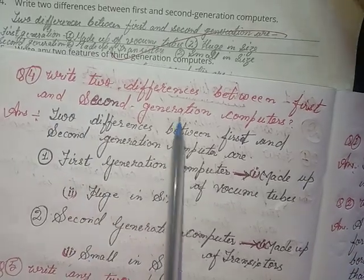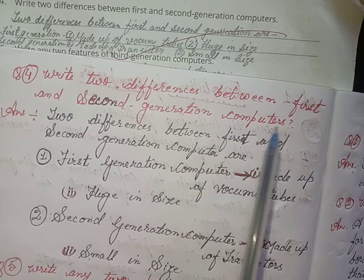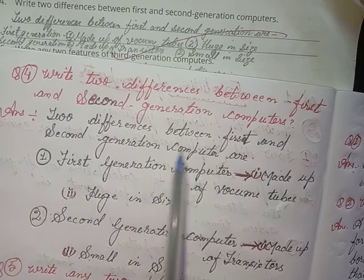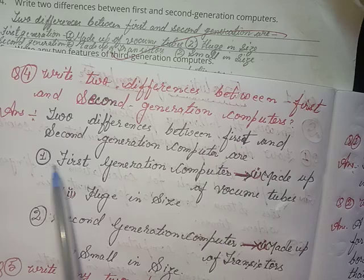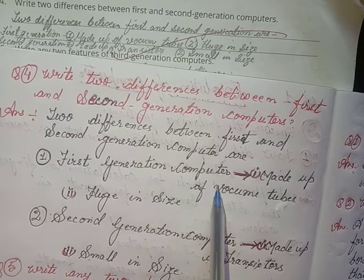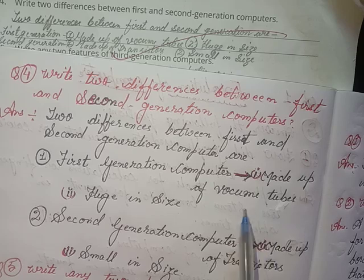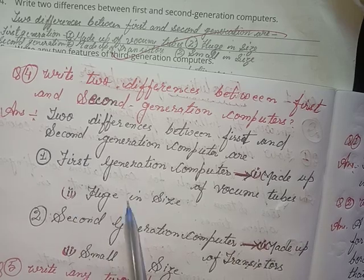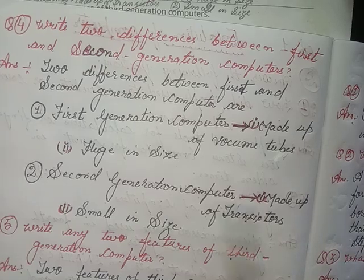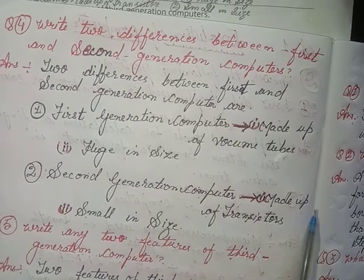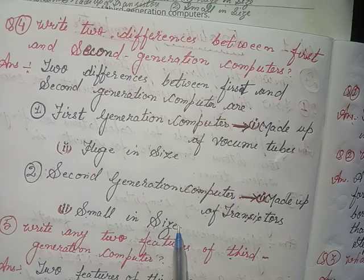Four, write two differences between first and second generation computers. Answer: First generation computers were made up of vacuum tubes and were huge in size. Second generation computers were made up of transistors and were small in size.